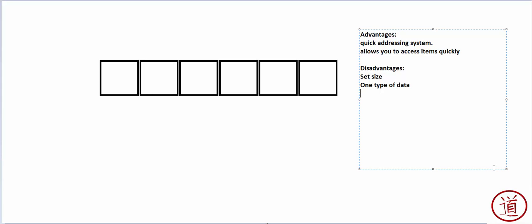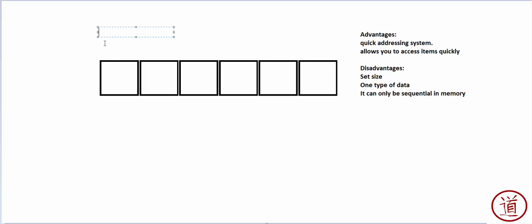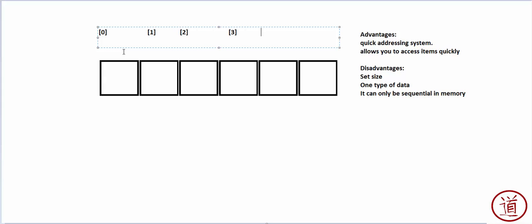Another disadvantage that people generally don't think about is that arrays can only be sequential in memory. What that means is that element zero has to be located in a specific spot in memory, and the next element, element one, has to be in the next memory spot. That's a consequence of the addressing system. If you don't understand how arrays work, this lesson's probably not going to make much sense to you.